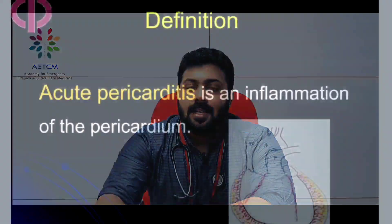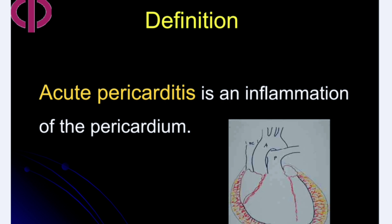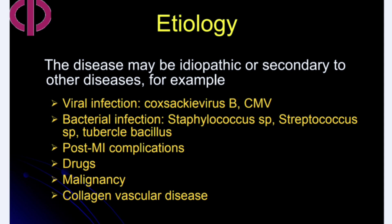Acute pericarditis is an inflammation of the pericardium. The disease may be idiopathic or secondary to other diseases, for example viral infections such as Coxsackie B virus and cytomegalovirus, bacterial infections such as staphylococcus, streptococcus species, and tuberculosis. Other causes include post-myocardial infarction complications, certain drugs, malignancies, collagen vascular disease, and uremia.